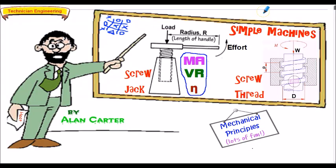Hello and welcome to this brief presentation related to simple machines. We're going to consider two machine types: the screw thread and the screw jack. For each machine type, we will calculate the mechanical advantage (MA), the velocity ratio (VR), and the efficiency (symbol eta).